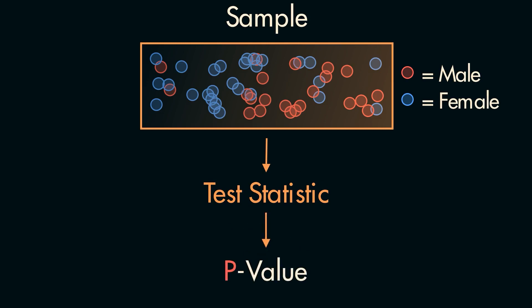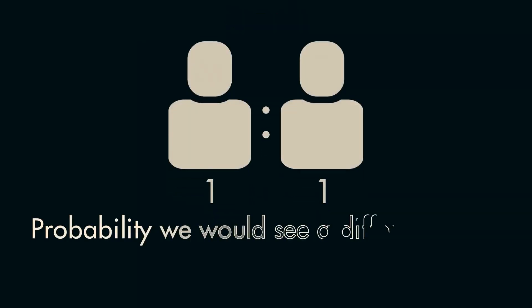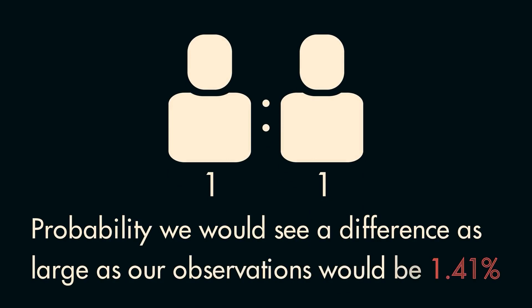Let's say you end up with a P-Value of 0.0141. Putting this into context means that if the ratio between men and women was actually one-to-one, the probability that we see a difference between men and women as large or larger than what we see in our sample is 1.41%.